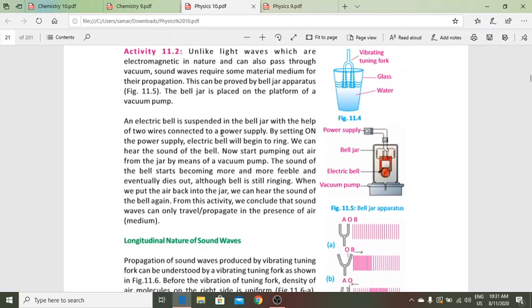An electric bell is suspended in the bell jar with the help of two wires connected to a power supply. By switching on, the electric bell will begin to ring and we can hear the sound of the bell. Now start pumping out air from the jar by means of a vacuum pump. The sound becomes more and more feeble and eventually dies out. When we put the air back into the jar, we can hear the sound again. From this activity, we can conclude that sound waves can only travel in the presence of air.